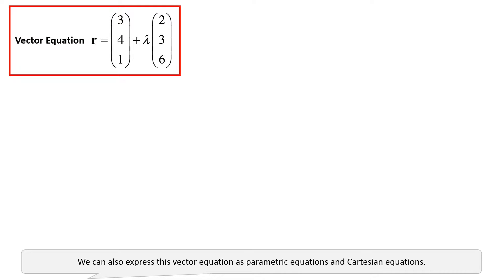We can also express this vector equation as parametric equations and Cartesian equations. Firstly, we can write the position vector r as the column vector x, y, z.